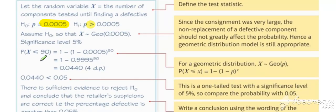That's a greater than test, so in this case for the geometric we work out the probability that X is less than or equal to 90. From your calculator, compare your probability with your significance level, and then again we can reject the null hypothesis on this occasion and conclude in the context of the question.